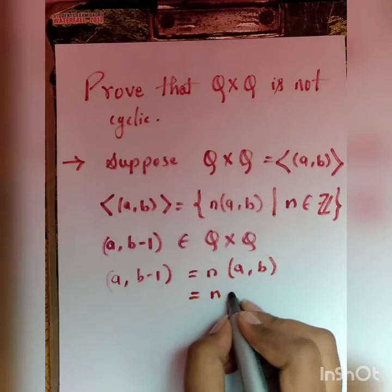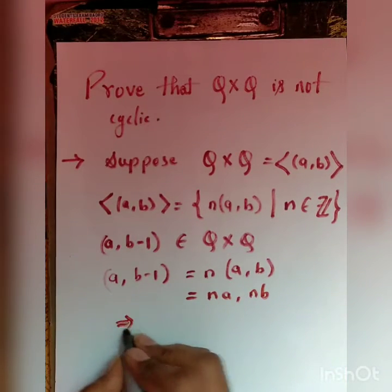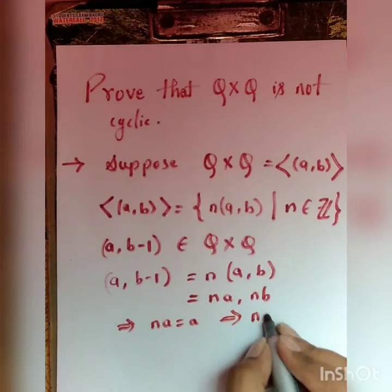This is equal to (na, nb). This implies na equal to a, which implies n equal to 1.